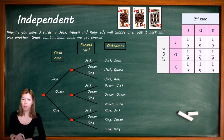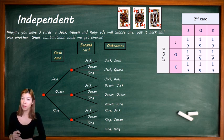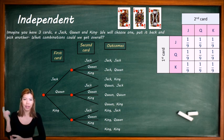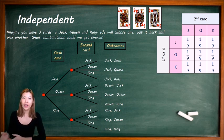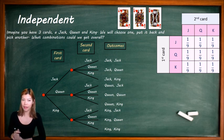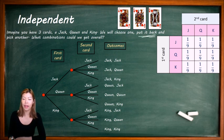Let's look at an example from the previous video really quickly — for a more thorough explanation, please refer to that video. So, independent events: imagine you have three cards — a Jack, a Queen, and a King. We will choose one card and put it back. The key word here is 'put it back,' so that the second event is not affected by the first event.